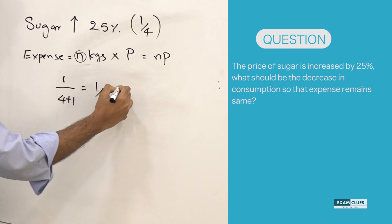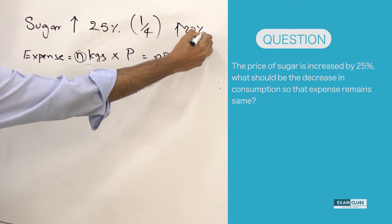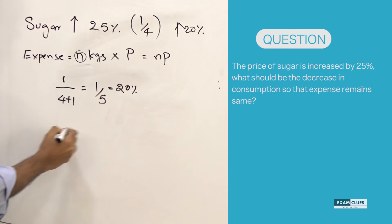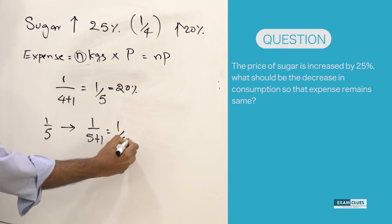Let's say if this is increased by 20% - 20% is 1 by 5 - the consumption should decrease. So this fraction should be reduced. That can be done by simply adding the numerator to the denominator, which is 1 by 5 plus 1 equals 1 by 6, and 1 by 6 is nothing but 16.66%.